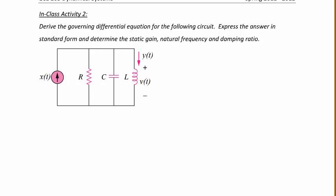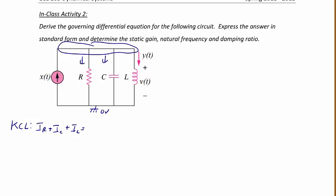Let's try another example. Here we have a parallel RLC circuit, or a single node pair. Since it's parallel, we're going to use KCL — Kirchhoff's Current Law — which states the sum of the currents into and out of a node equals zero. We label the bottom node as ground and the top node as V of t. Making IR, IC, and IL leave the node, we have IR plus IC plus IL equals x of t. In this case, y of t is our output — the current through the inductor.